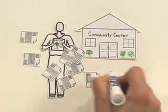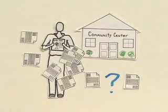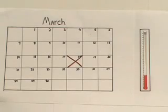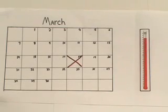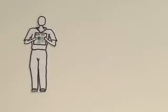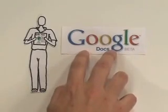Sam often feels buried by all the email attachments. She finds it hard to keep track of all the versions being sent to her from the writers. As the deadline looms, frustration rises. Something has to give. Sam decides to try something new: Google Docs.